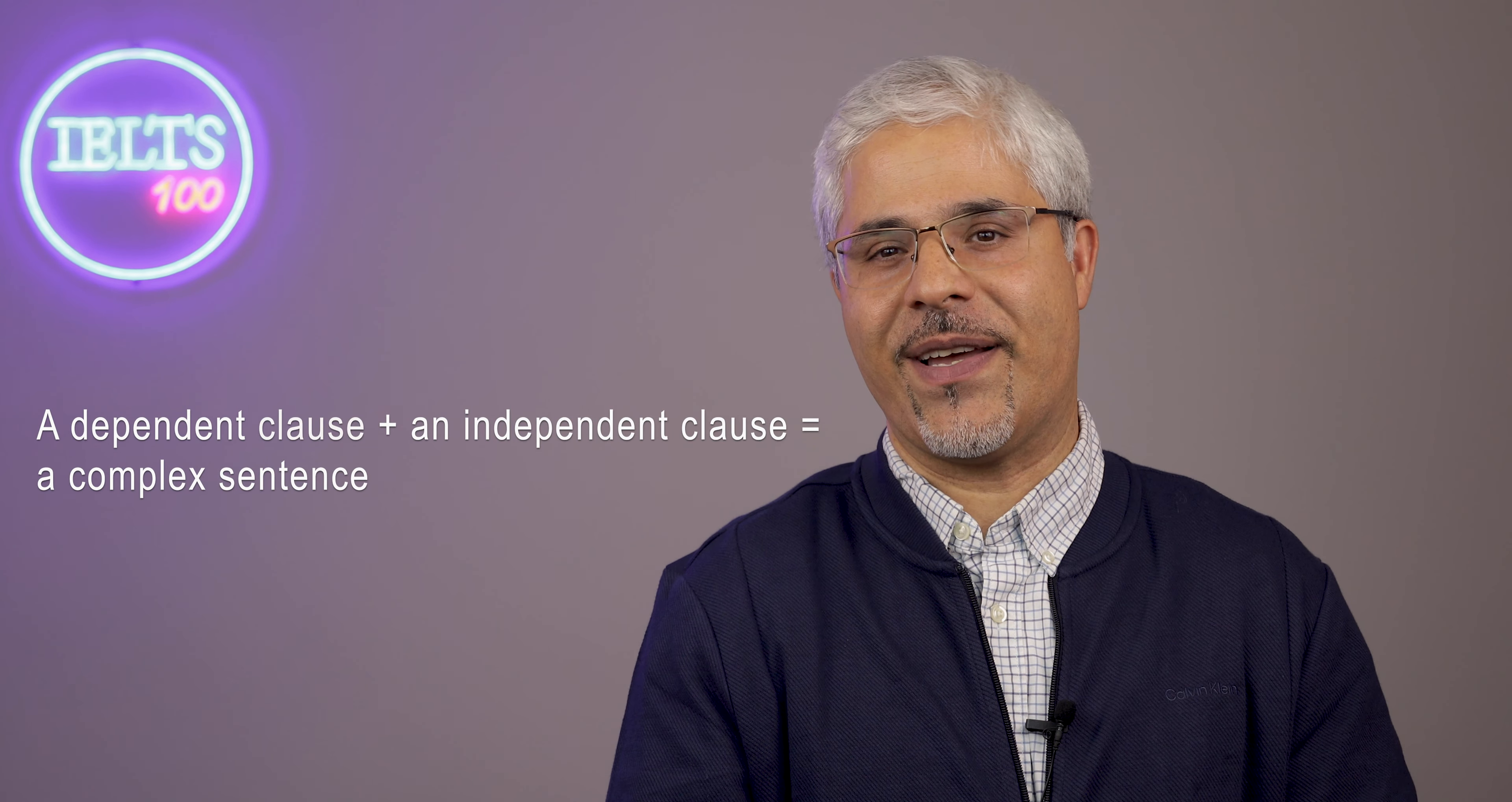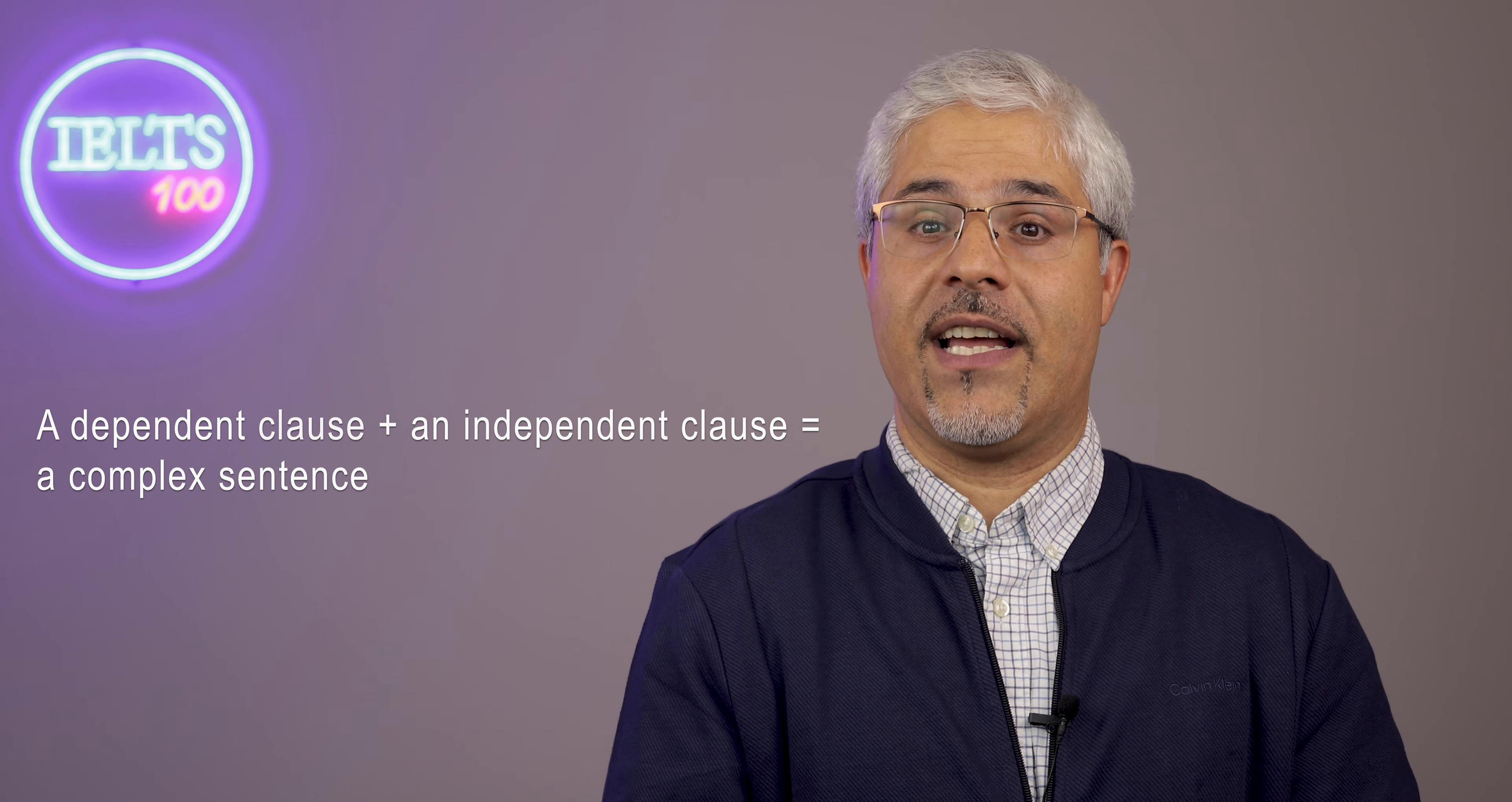So, when you add a dependent clause to an independent clause, you have created a complex sentence. Please note that a complex sentence only has one main idea, while a compound sentence, the sentence that I discussed in video lesson 4, has two or more main ideas, depending on the number of independent clauses in it. In order to learn how to make complex sentences correctly, you need to learn the three types of dependent clauses. And in this lesson, I will teach you just that.